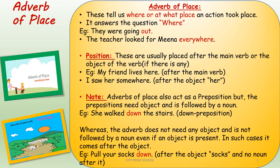But if I change the position and write 'teacher looked everywhere for Mina,' here Mina — a noun — comes after 'everywhere,' so it becomes a preposition. Hence the position of adverb of place is very important: if you change the position and there is a noun after it, it changes to a preposition. One more example: 'She walked down the stairs' — here 'down' is a preposition because we have a noun after it. But in 'pull your socks down,' there is no noun after 'down,' hence 'down' is adverb of place.